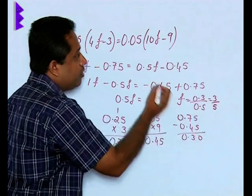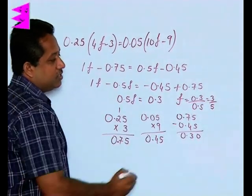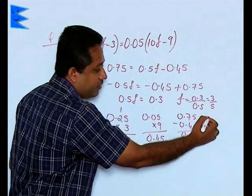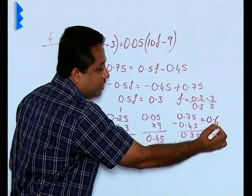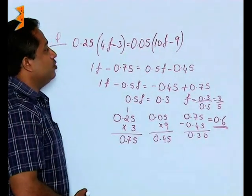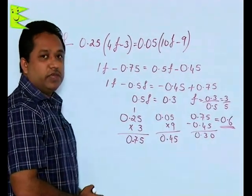However, when the question is in decimals, our answer should also be in decimals. The final answer we get is 3 upon 5, that is 0.6. Therefore, 0.6 will be the final solution, or the value of F will be 0.6.